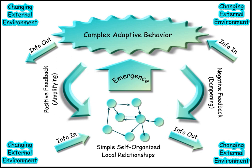Sociotechnical theory is about joint optimization, with a shared emphasis on achievement of both excellence in technical performance and quality in people's work lives. Sociotechnical theory, as distinct from sociotechnical systems, proposes a number of different ways of achieving joint optimization. They are usually based on designing different kinds of organization, ones in which the relationships between socio and technical elements lead to the emergence of productivity and well-being.